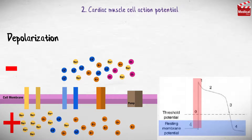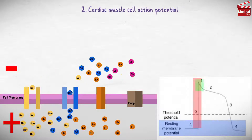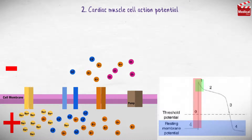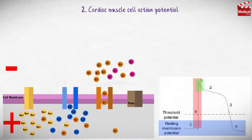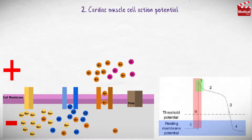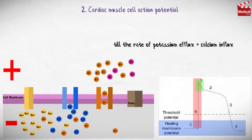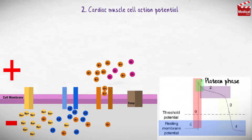Also, L-type calcium channels open up, leading to a slow influx of calcium ions. Then in phase 1, inactivation of sodium channels occurs rapidly, and potassium channels open up, leading to efflux of potassium, while calcium channels still remain open with a slow influx of calcium ions. The fast efflux of potassium and slow influx of calcium makes the inside of the cell more negative and the outside more positive, leading to a decrease in the potential, as shown in the graph. This continues until the rate of potassium efflux equals calcium influx, where it reaches the plateau phase, which is phase 2.